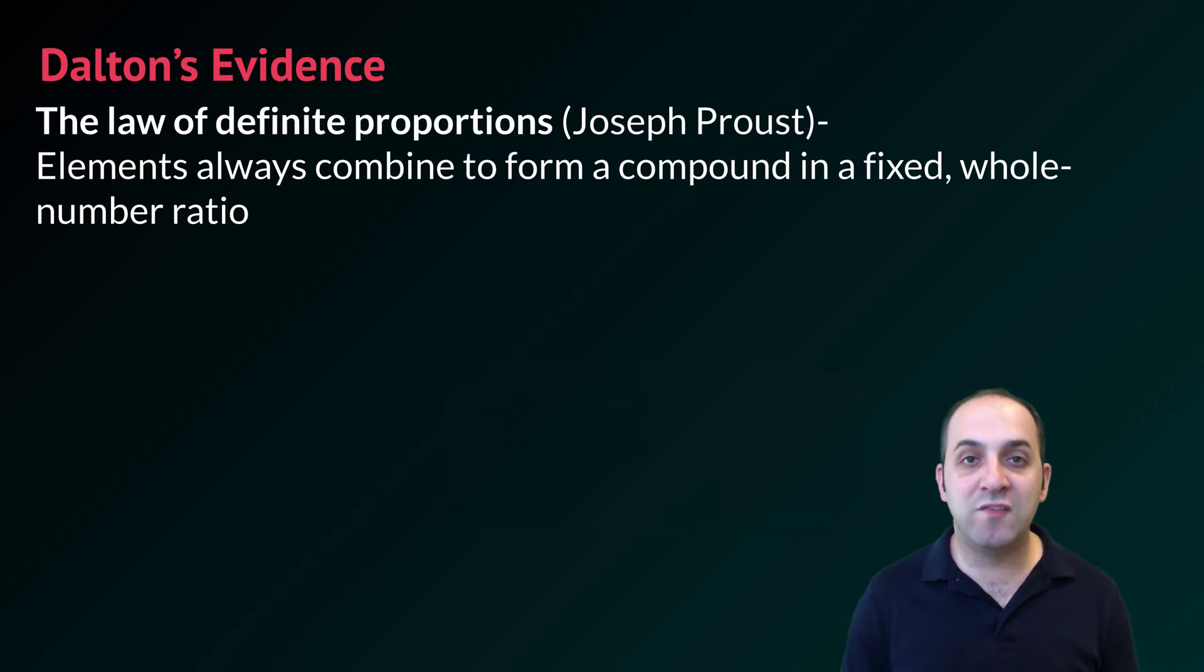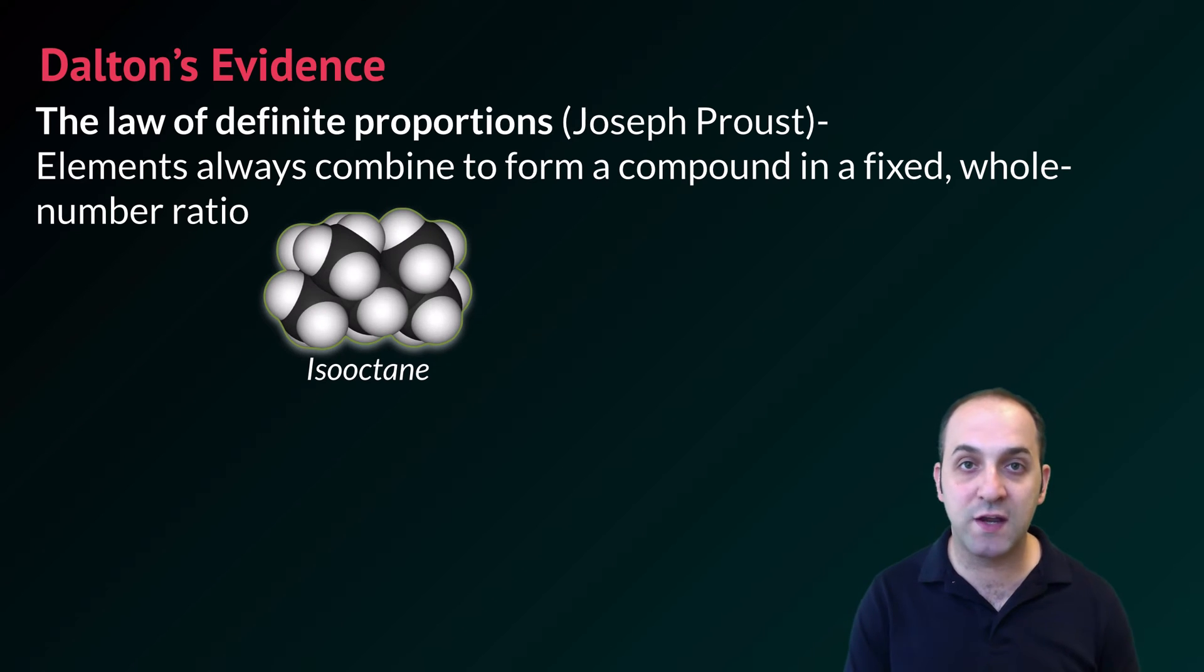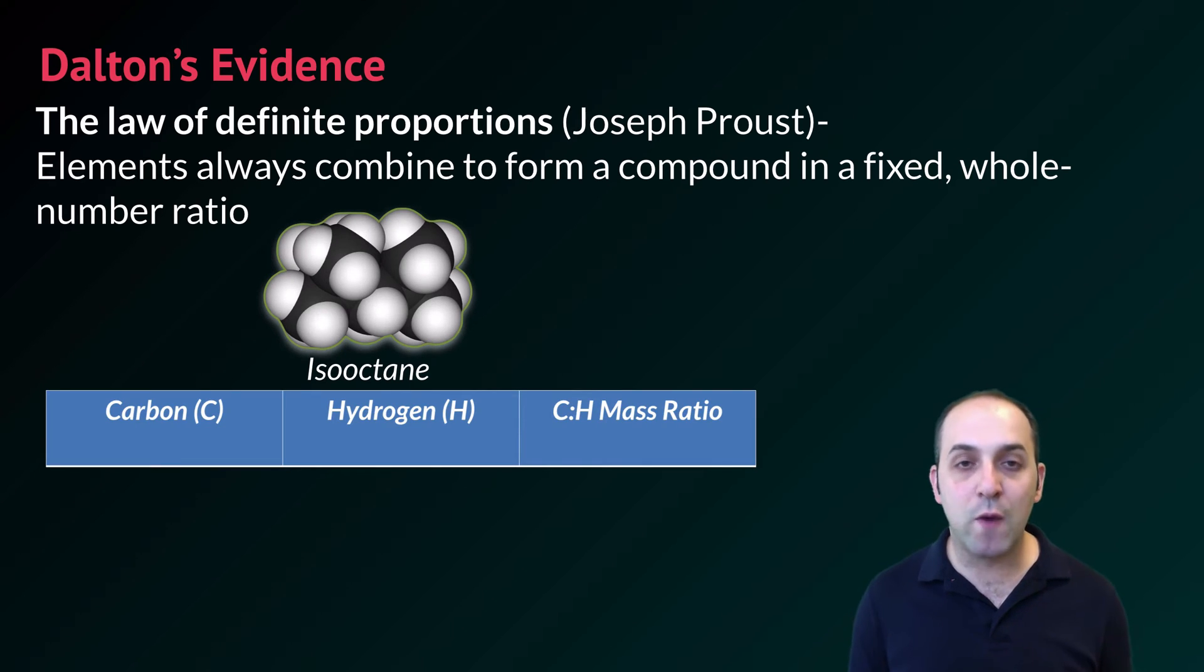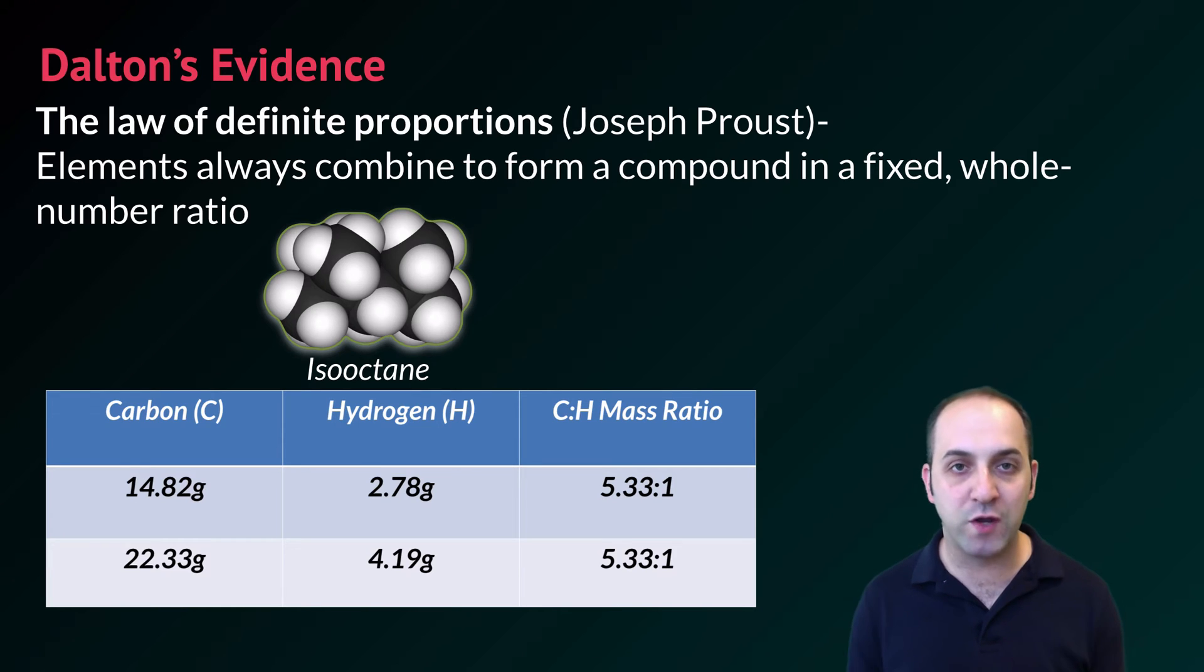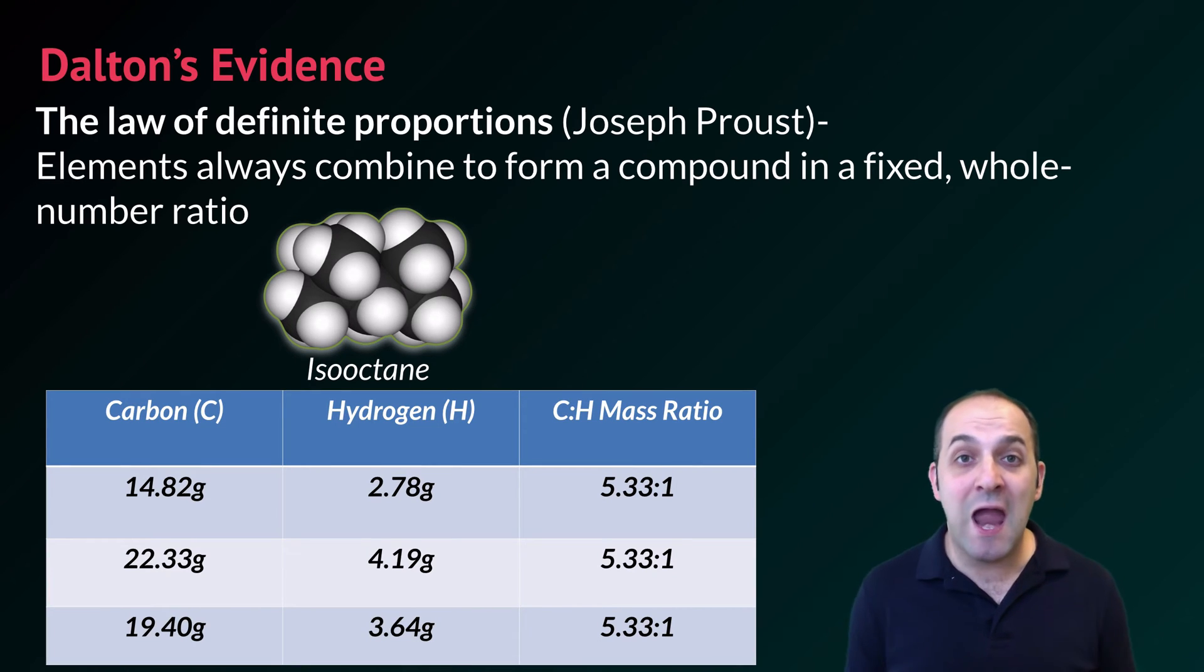Let's take a look at some of the evidence. One major piece actually comes from French chemist Joseph Proust who came up with the law of definite proportions. That's this idea that elements always combine to form a compound in a fixed whole number ratio. Here is a particular compound called isoctane. If you look at the ratio of carbon and hydrogen by mass in different amounts of isoctane, you're always going to get a carbon to hydrogen mass ratio of 5.33 to 1. It's always going to be the same. If we had a different compound like methane, that mass ratio would be different, but again, no matter what mass we took, the ratio would always be the same value.